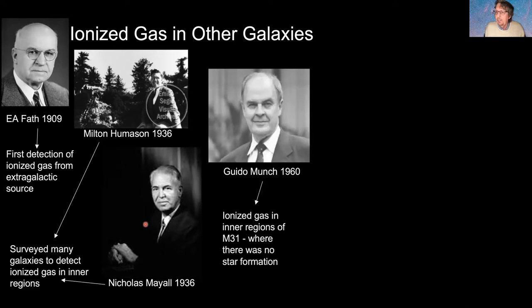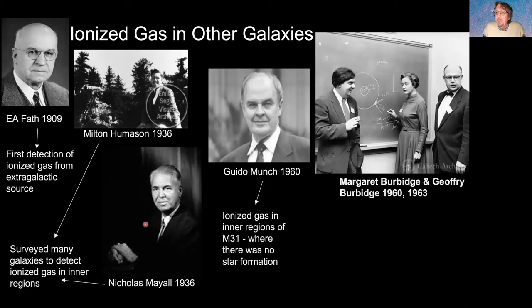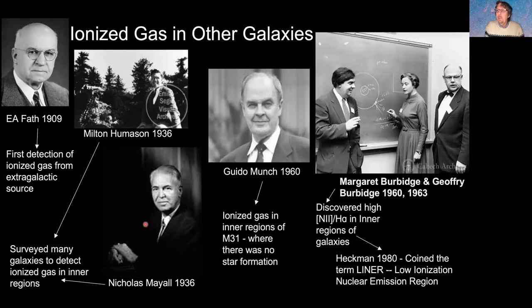Margaret Burbidge and her husband Geoffrey Burbidge surveyed galaxies and found that many galactic centers were characterized by very high nitrogen-to-hydrogen optical line ratios that could not be produced by hot stars. This gave rise to a class of galaxies called LINERs — Low Ionization Nuclear Emission Regions — though that's really just a placeholder name for something we still don't fully understand.